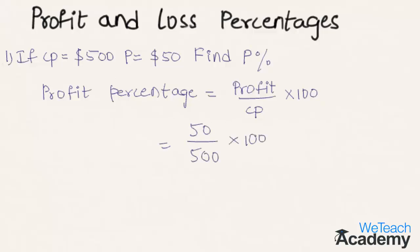Simplifying, 100 divided by 100 is 1, and 100 times 5 is 500. Further simplifying, 5 divided by 5 is 1, and 5 times 10 is 50. So the profit percentage is 10%.